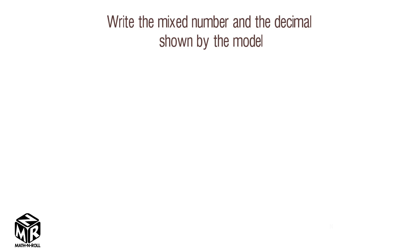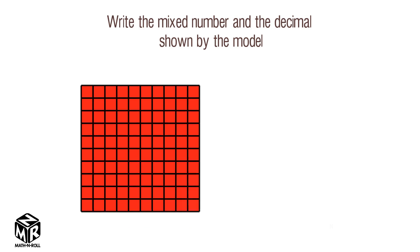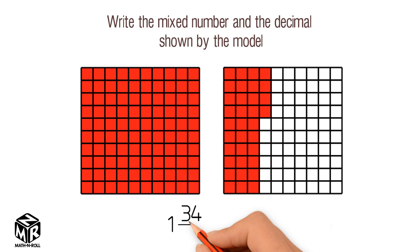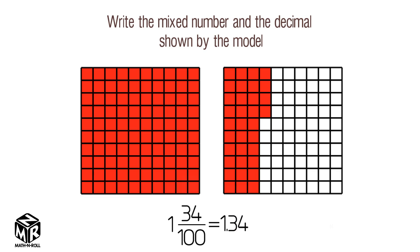Let's try another example. Write the mixed number and the decimal shown by the model. This time we have one whole model and thirty-four parts out of one hundred. We can write this using a mixed number: one and thirty-four hundredths. We can also write it as a decimal: 1.34, or one and thirty-four hundredths.